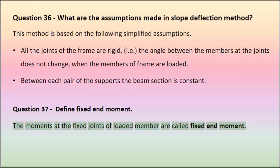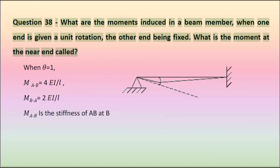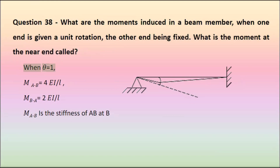Question 37: Define fixed end moment. The moments at the fixed joints of a loaded member are called fixed end moments. Question 38: What are the moments induced in a beam member when one end is given a unit rotation, the other end being fixed? What is the moment at the near end called? When theta equals 1, the near end moment equals 4EI/L and the far end moment equals 2EI/L. The near end moment is called the stiffness of member AB.